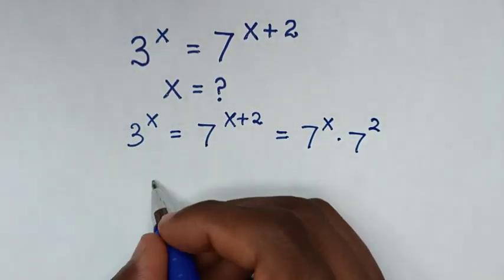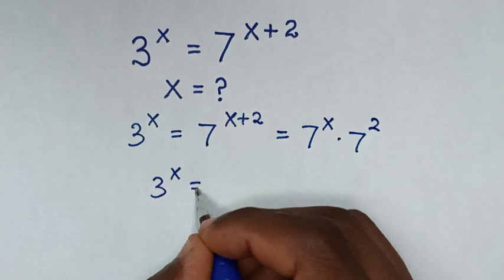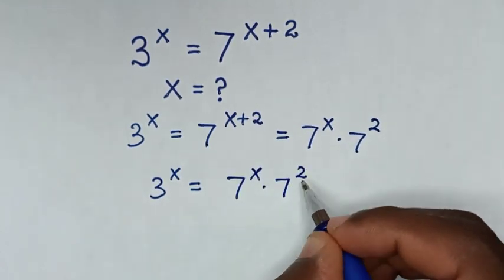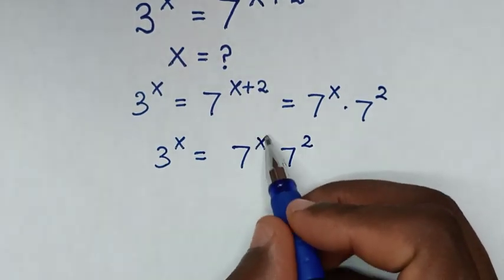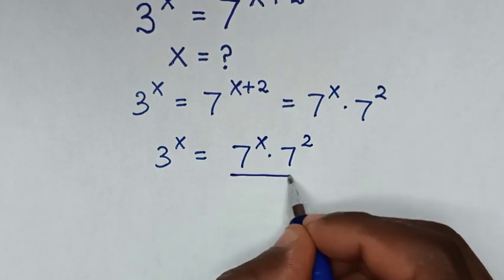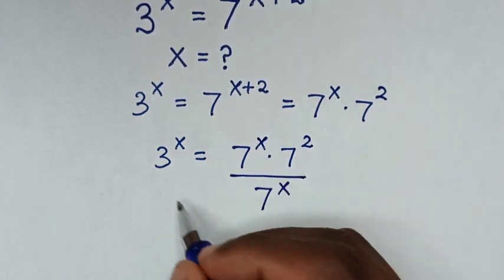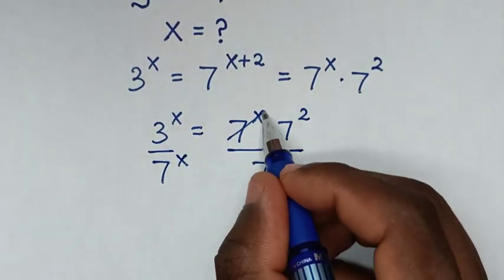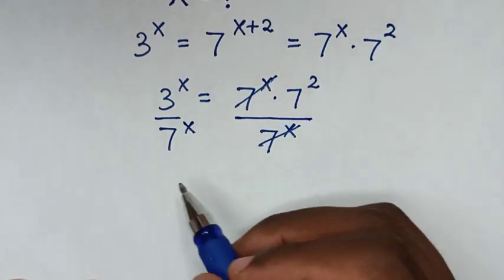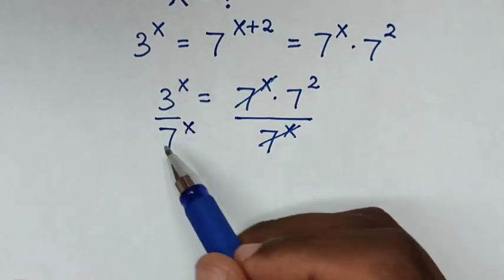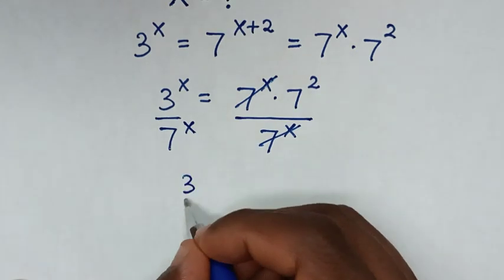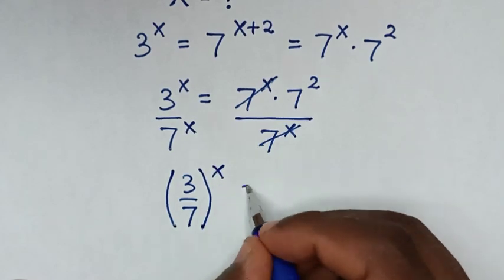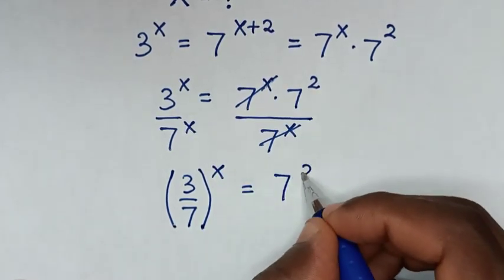In the next step, 3 power of x is equal to 7 power of x times 7 power of 2. We make like terms of power of x on one side, so we divide by 7 power of x on both sides. This and this will cancel, and this division of exponents with the same power of x gives 3 over 7, raised to the power of x, is equal to 7 power of 2.